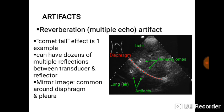You have reverberation or multiple echo artifacts — also called the comet tail effect. This involves dozens of multiple reflections between the transducer and the reflector, creating mirror images of the structure you are actually looking at. For instance, the image appears 1 cm into the body, then reflects back to the transducer and serves as a second image, which is reflected again — resulting in an image at point A and an artifact at point B. A hemangioma is an example of what can cause this.